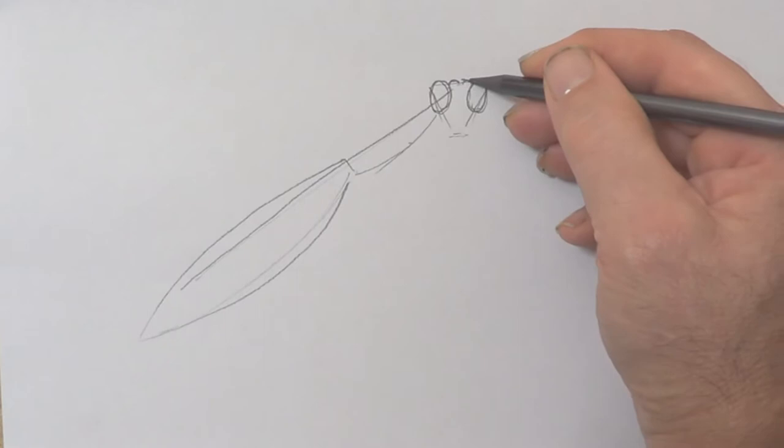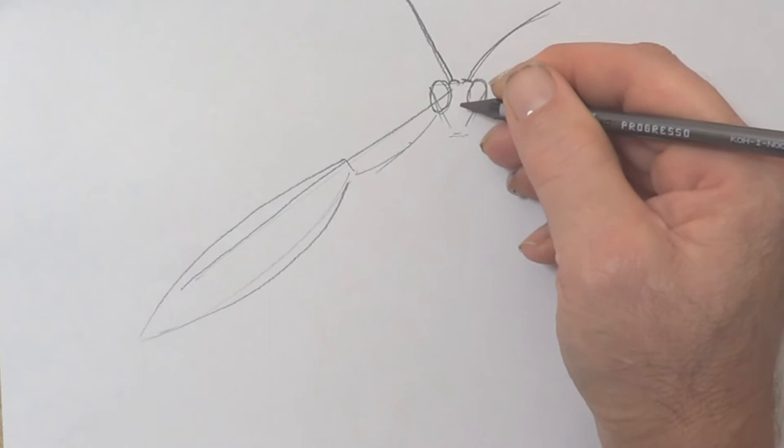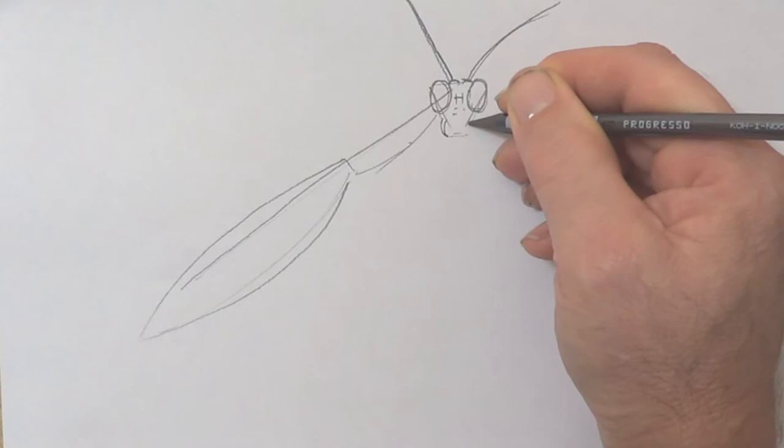Just draw some lines like that. Now the mouth parts. Well first we're going to put a little dip there. Just a little bit of shape there and out here like brackets. These are the mouth parts, the funny little mouth parts that they use to eat things with.